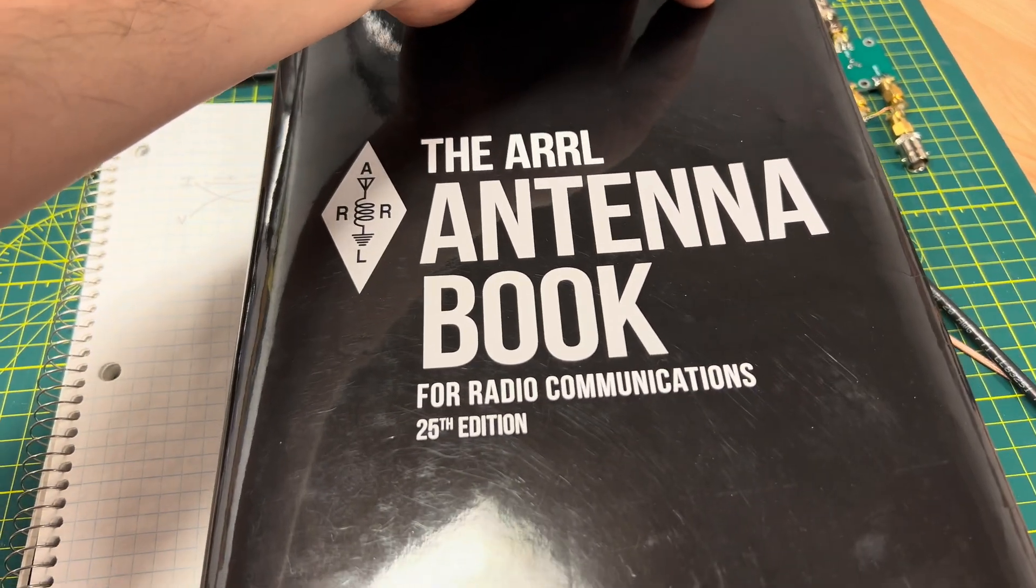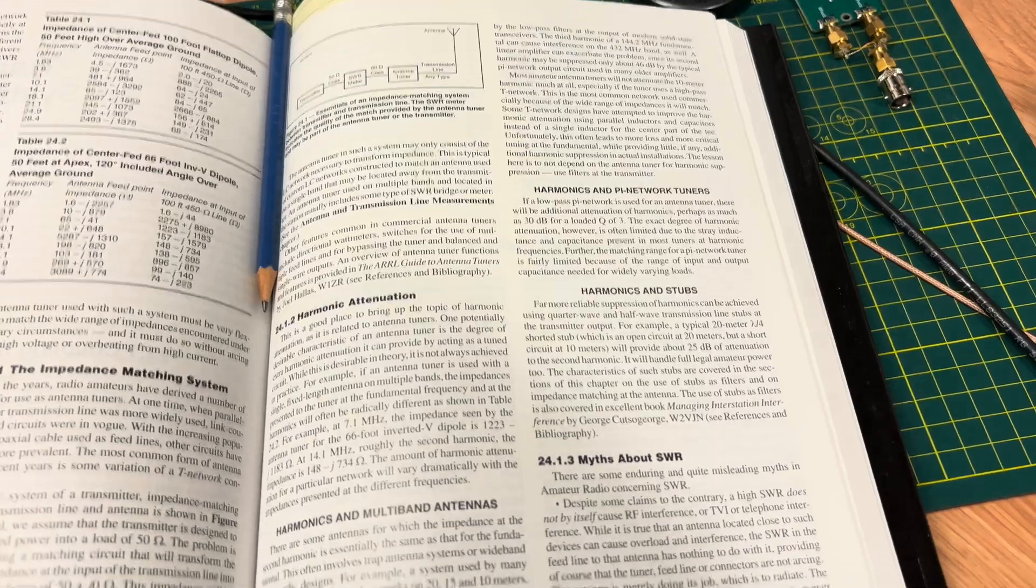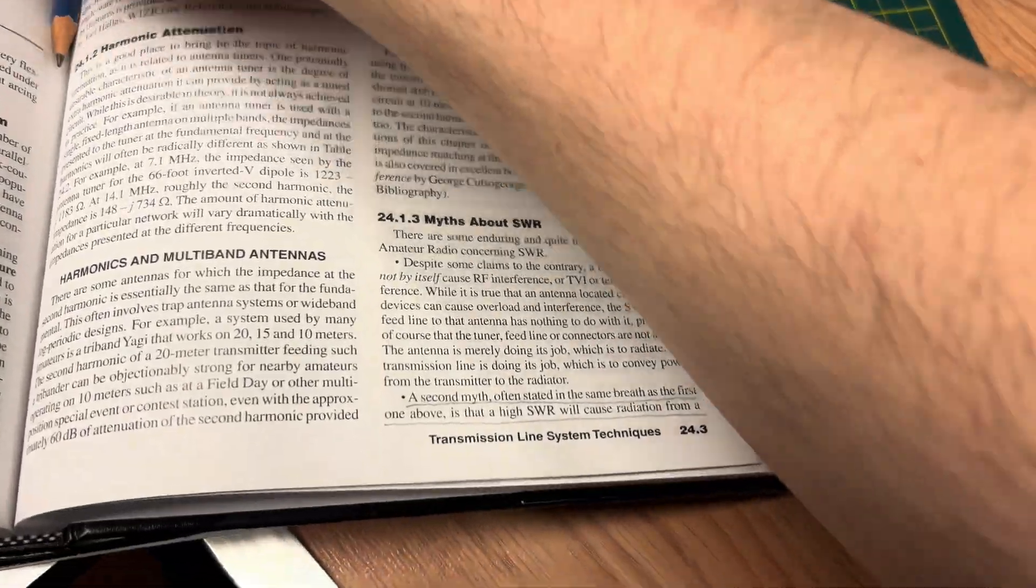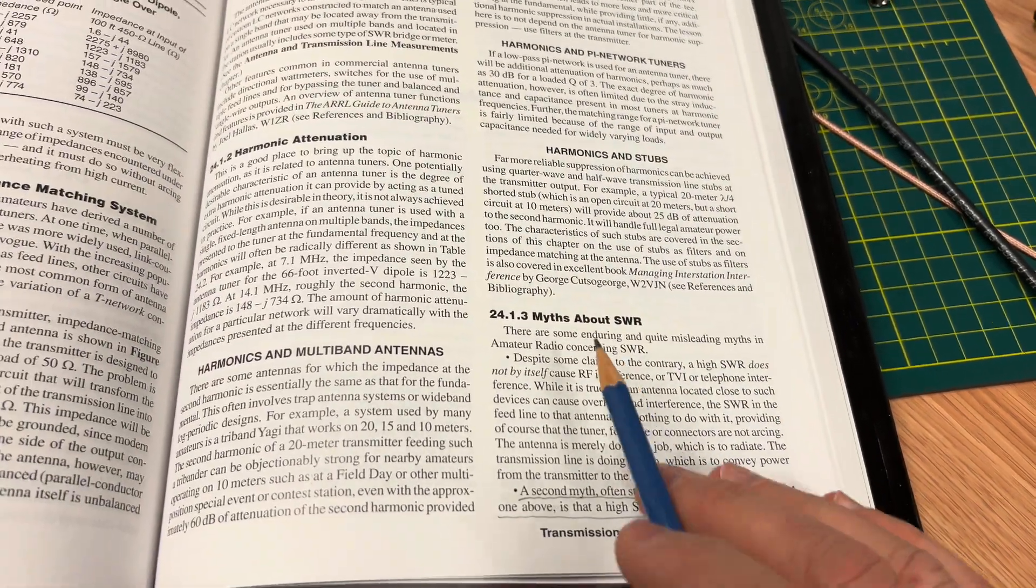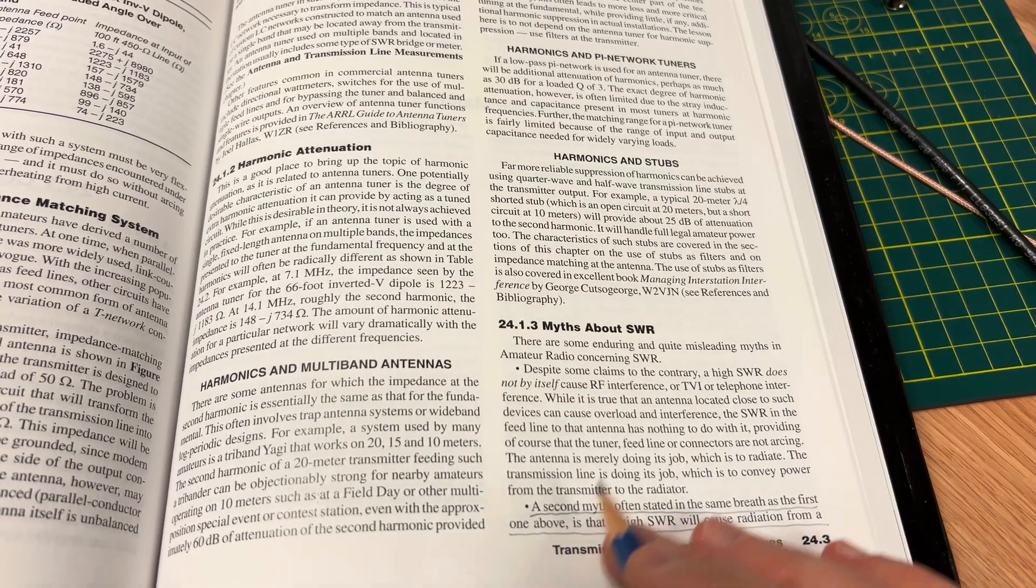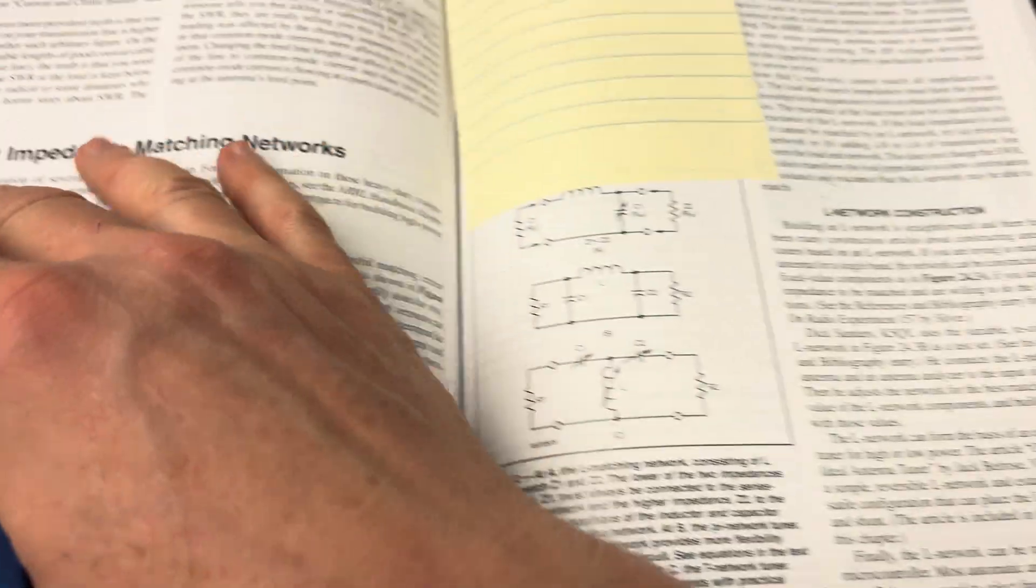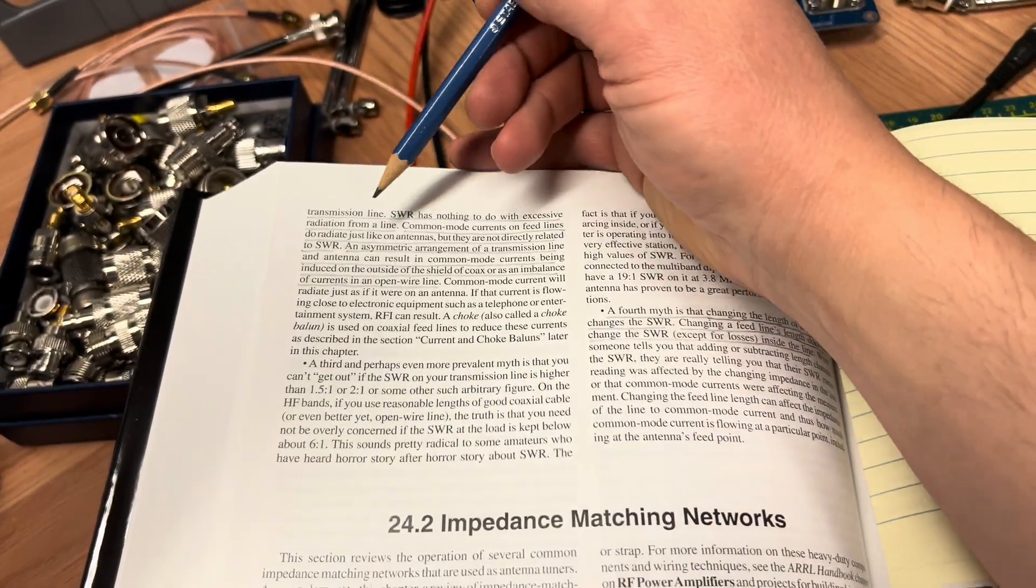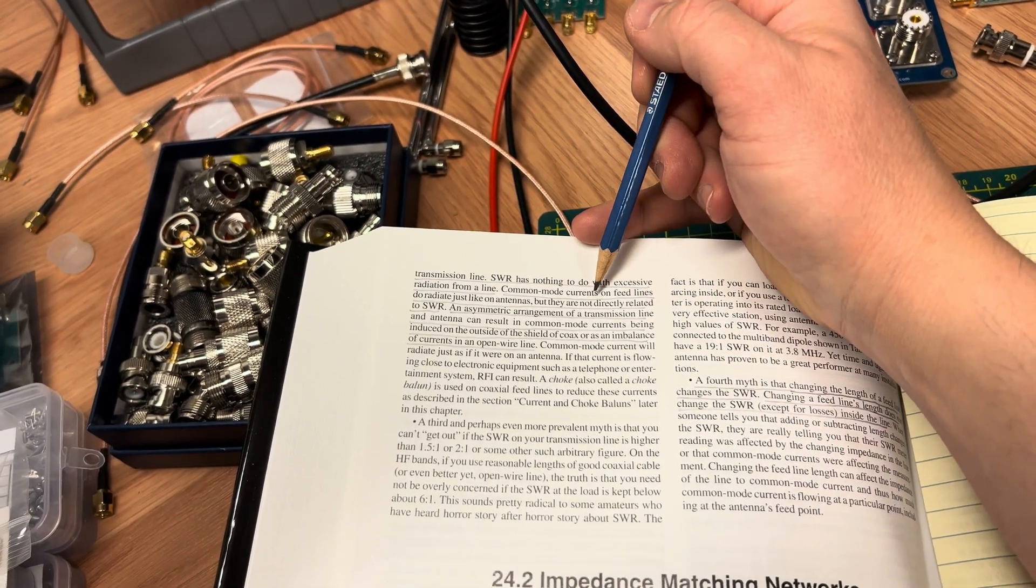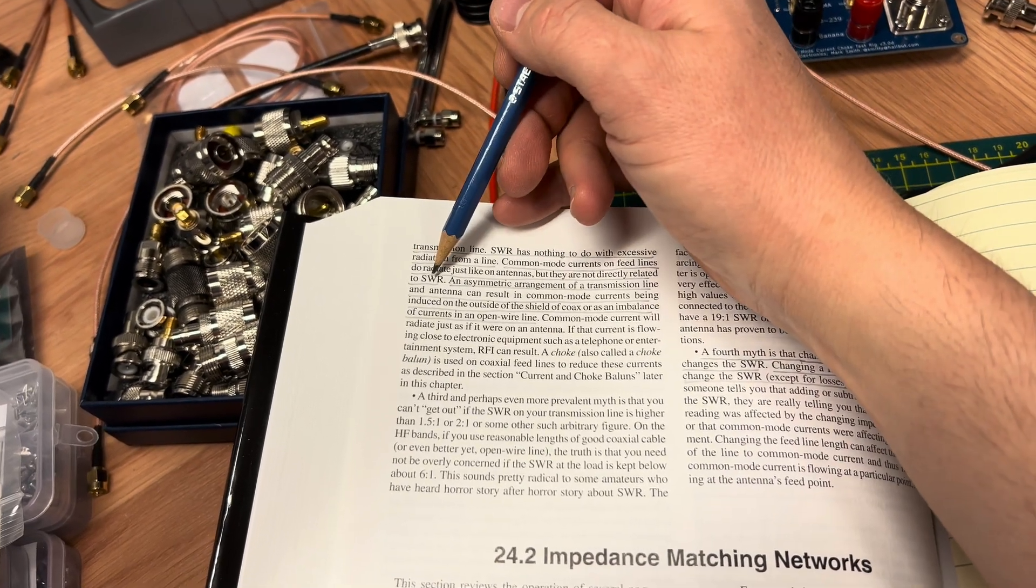Let's go ahead and take a look at a reliable source. The ARRL antenna book, I happen to have the 25th edition here, and I found a section in here that actually deals with the subject that we're talking about in this video. Let's take a read here. Myths about SWR. Often stated in the same breath as the first one above is that high SWR or reflected power will cause radiation from a transmission line. SWR has nothing to do with excessive radiation from a line. Common mode currents on feed lines do radiate just like on antennas, but they are not directly related to SWR.